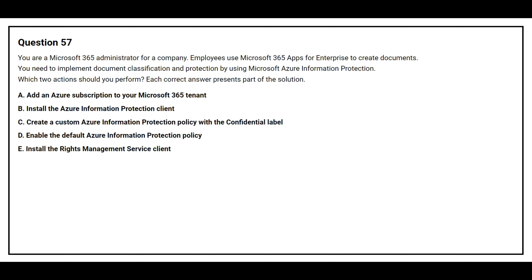Option A: Add an Azure subscription to your Microsoft 365 tenant. Option B: Install the Azure Information Protection client. Option C: Create a custom Azure Information Protection policy with the confidential label. Option D: Enable the default Azure Information Protection policy. Option E: Install the Rights Management Service client.